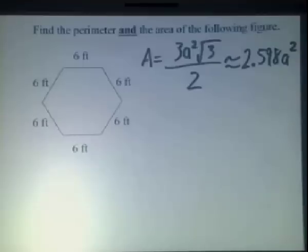Let's find the perimeter and area for the regular hexagon shown below. We know it's regular because each of the sides is 6 feet.